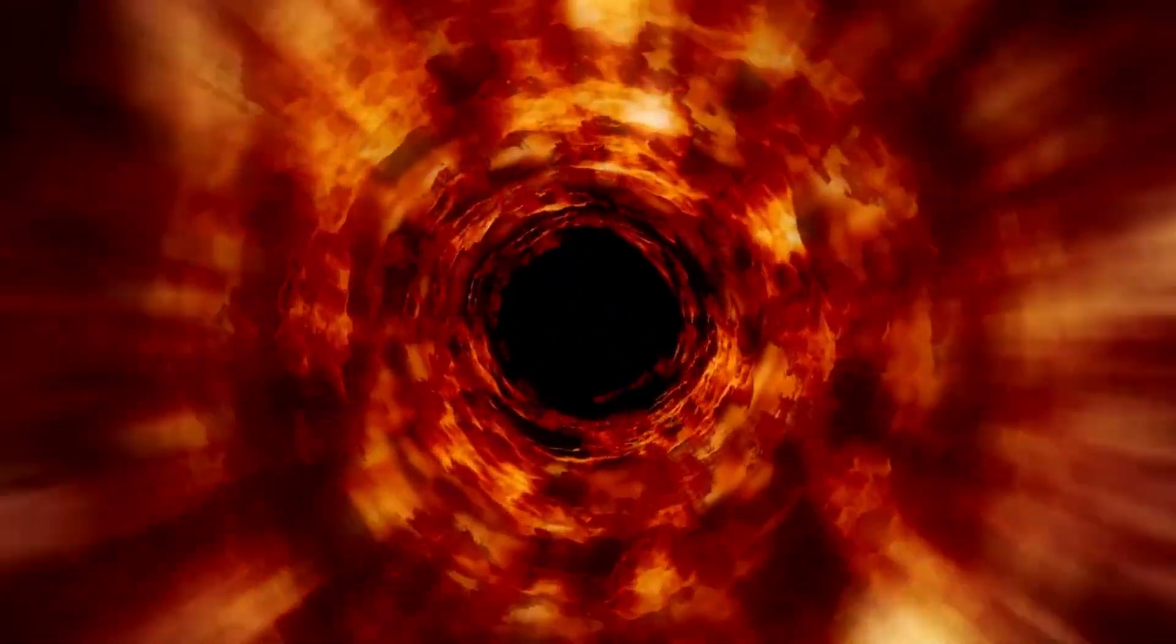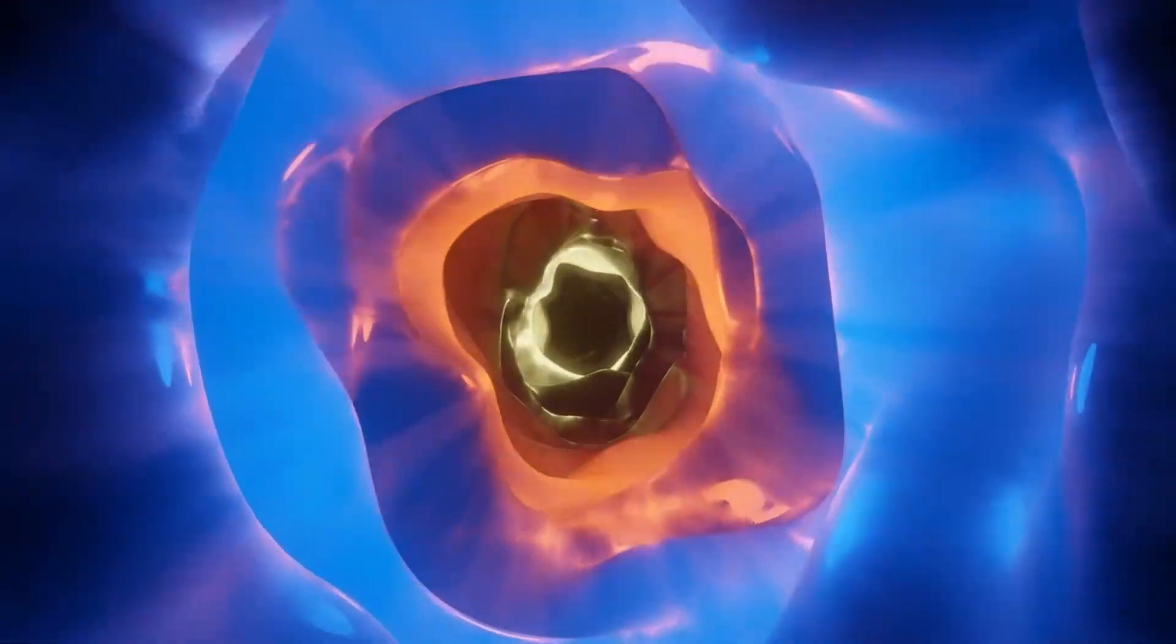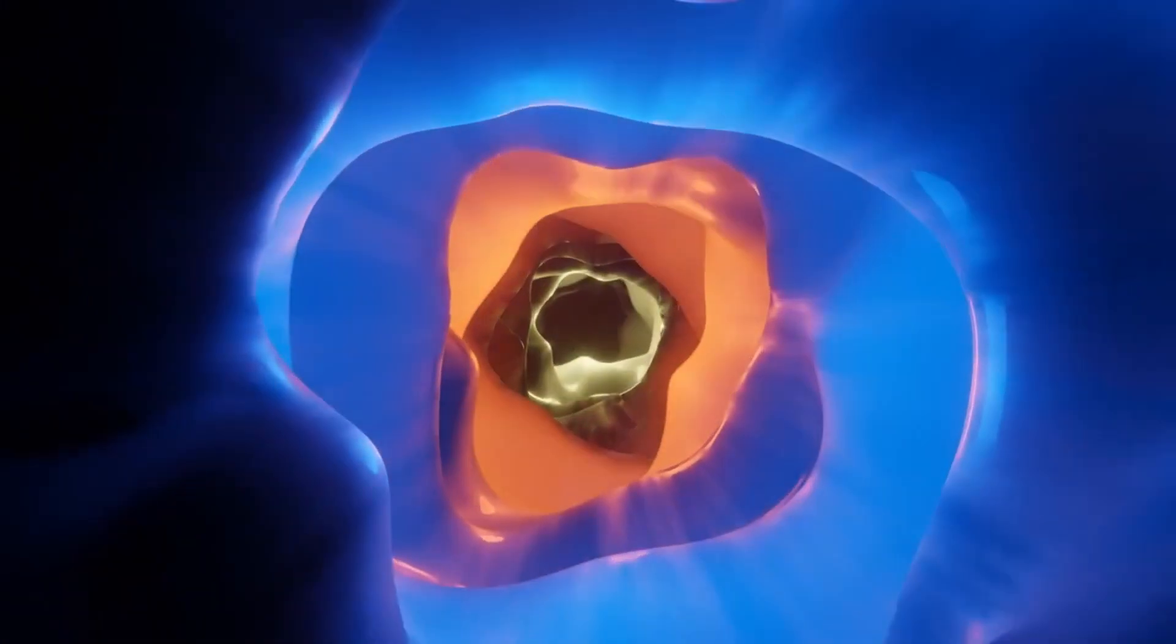If one were to fall into a black hole instead of being crushed, they might pass through this wormhole and emerge in a different universe or even at a different point in time. To understand how a wormhole works, we must first grasp the concept of spacetime. According to Einstein's theory of relativity, space and time are intertwined, forming a four-dimensional fabric.